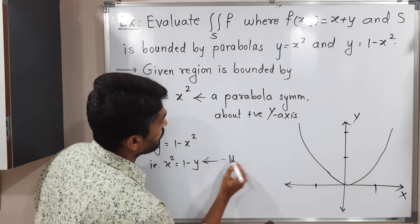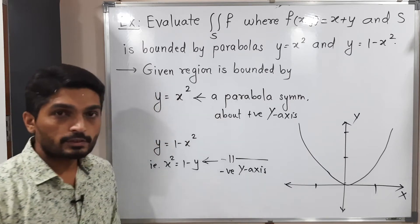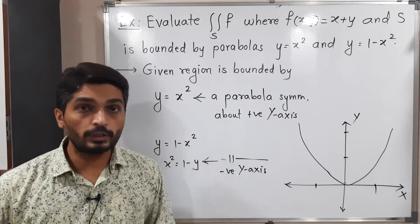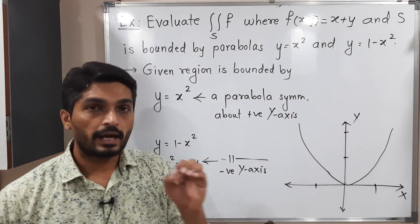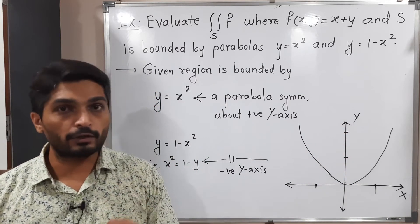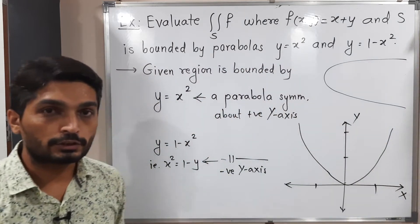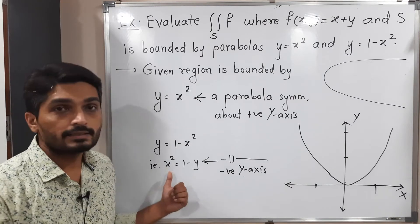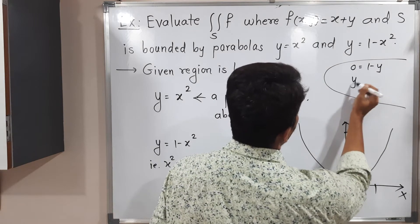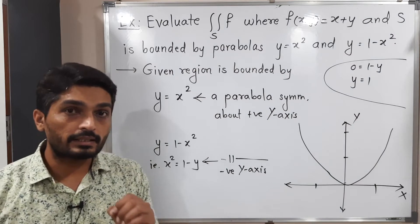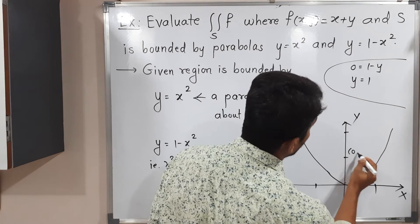This parabola is symmetric about the negative y-axis but it does not pass through the origin, so it cuts the y-axis at some point. To find that point, put x = 0: we get 0 = 1 − y, so y = 1. Therefore it cuts the y-axis at point (0, 1).